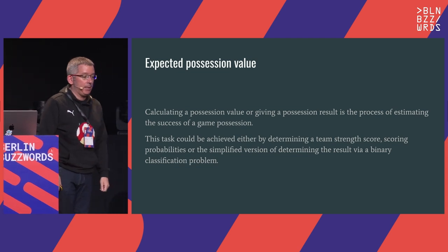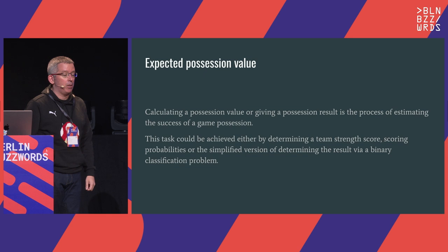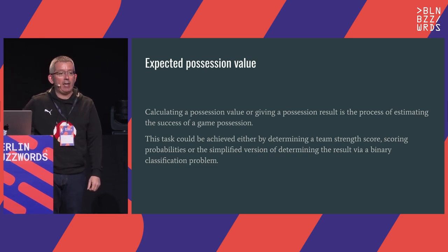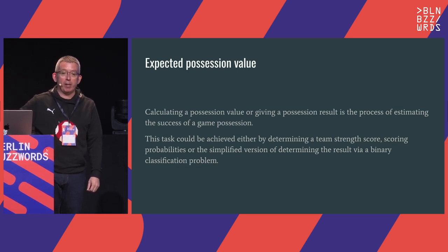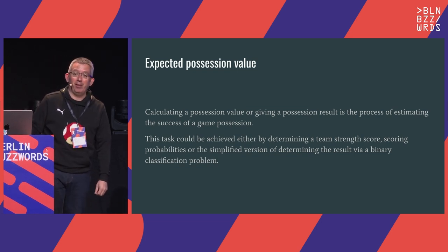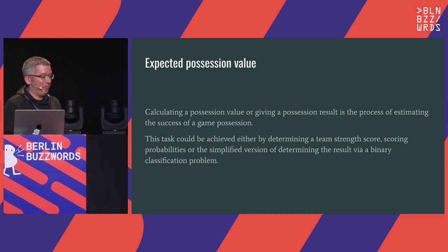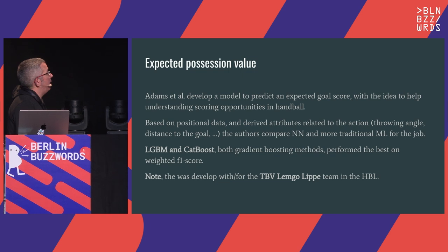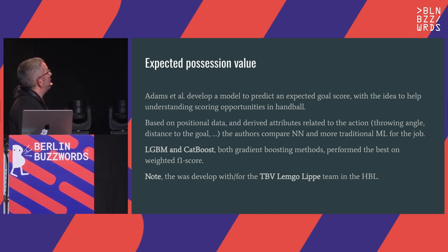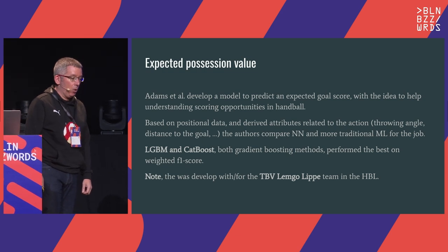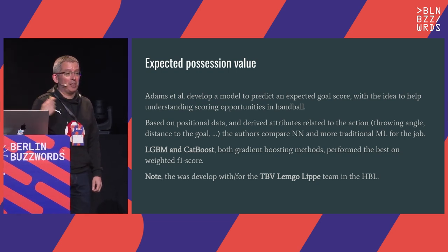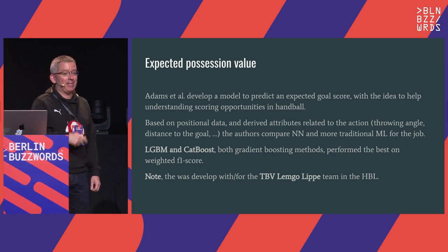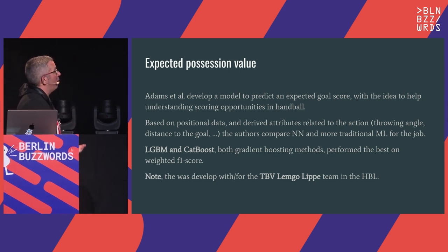Another very interesting area is expected possession value — basically, whether in the next few seconds there is going to be a goal or not. So you know if your team is better positioned, like a score rating in FIFA. This is done by professional handball teams in Germany, like TBV Lemgo, who tested a lot of different algorithms. They tested neural networks, and the best one was gradient boosting. So sometimes traditional algorithms work quite well.